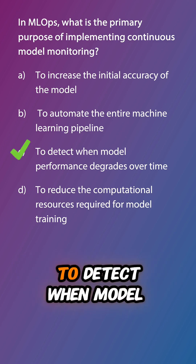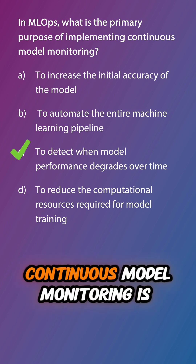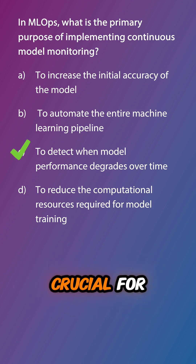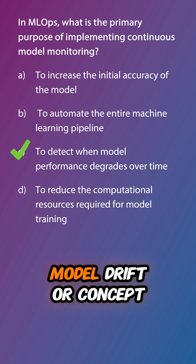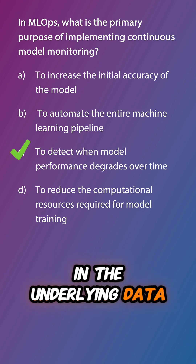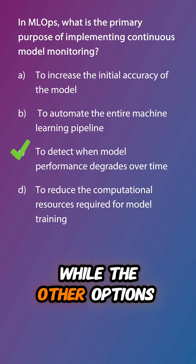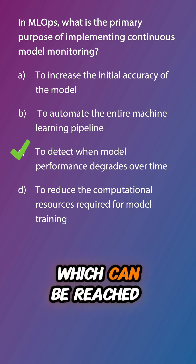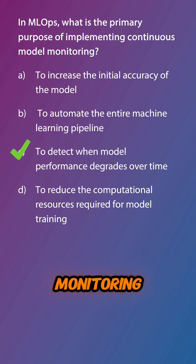The answer is C — to detect when model performance degrades over time. Continuous model monitoring is crucial for identifying when a model's performance starts to decline. This degradation, often called model drift or concept drift, can occur due to changes in the underlying data distribution or shifts in user behavior. While the other options are benefits of following an MLOps approach, they do not directly relate to continuous model monitoring.